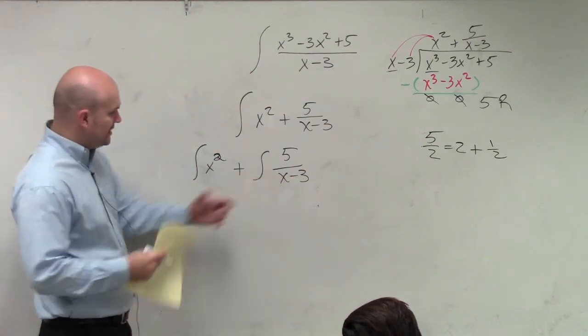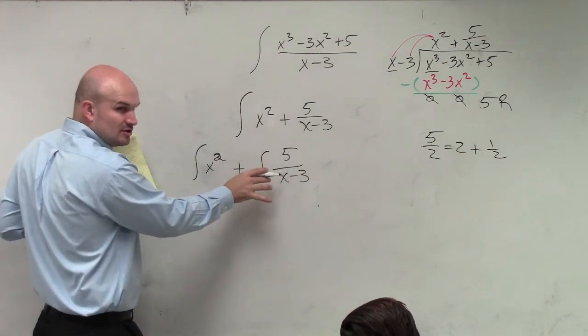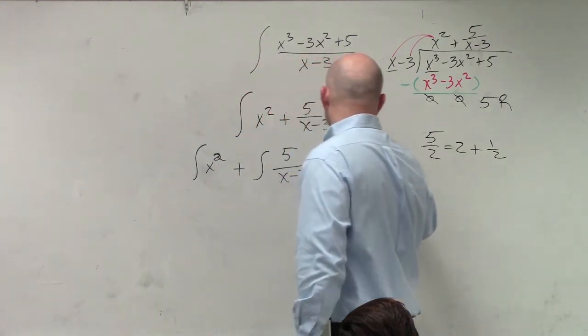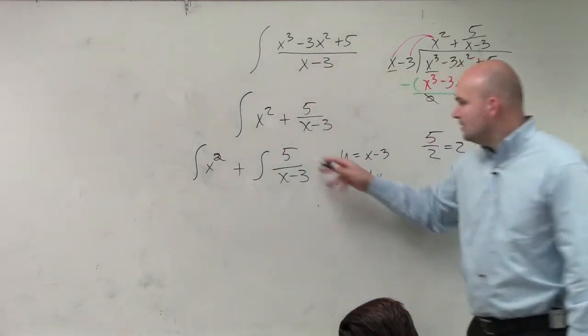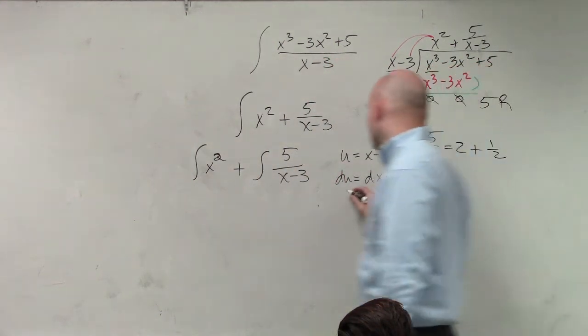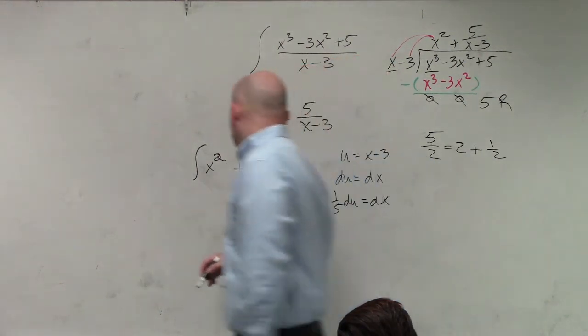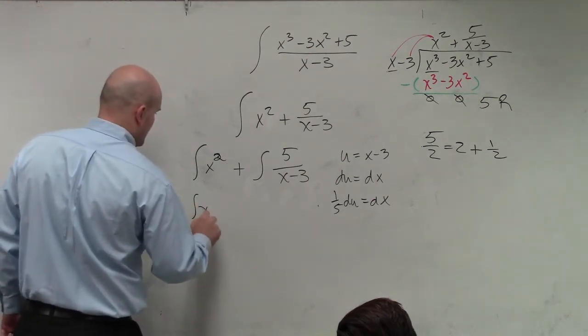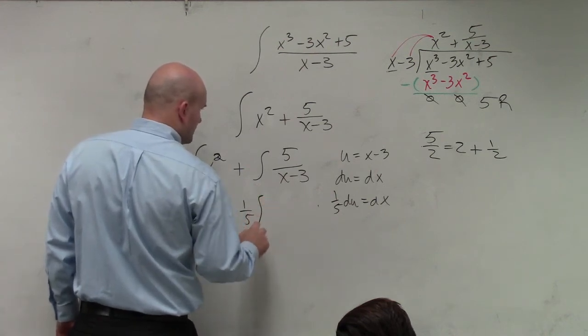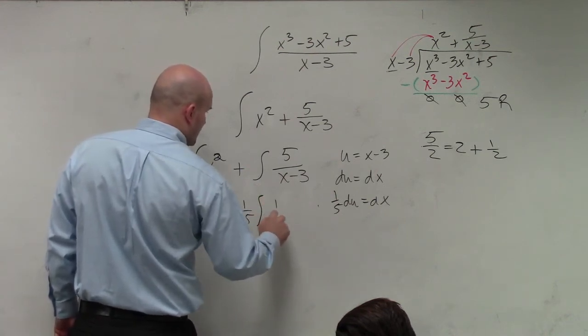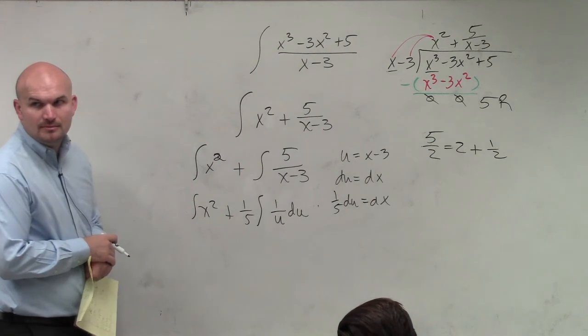And now, what you guys can see is, over here, obviously this is easy to integrate. But over here, we're just a little u substitution away from doing this one. So I could say u is equal to x minus 3. du is equal to dx. Obviously, I need to get this 5 out of the way, though. So therefore, it's going to be one-fifth du is equal to dx. So it's going to look something like this. x squared plus one-fifth one over u du. Are we okay?